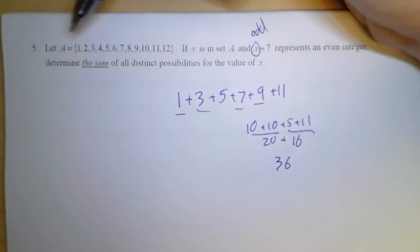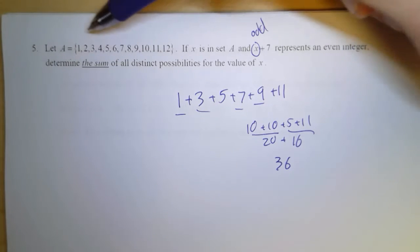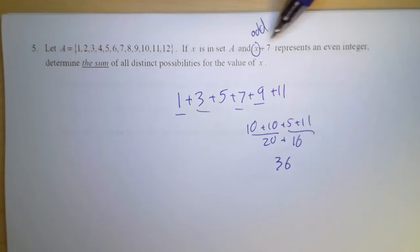Again, that's the sum of all the odd numbers in this set, because only an odd number when you add 7 is going to give you an even integer. So 36 gives us the sum, and we're done.